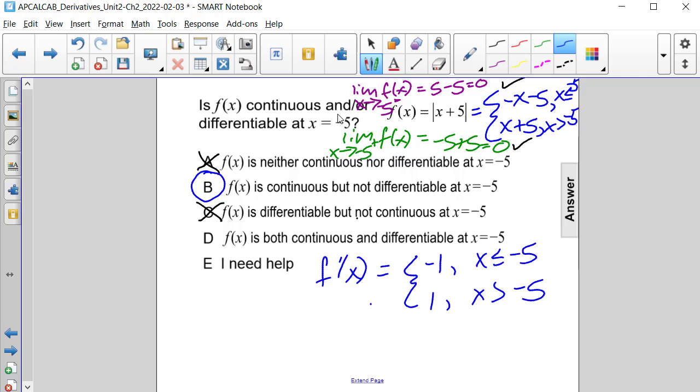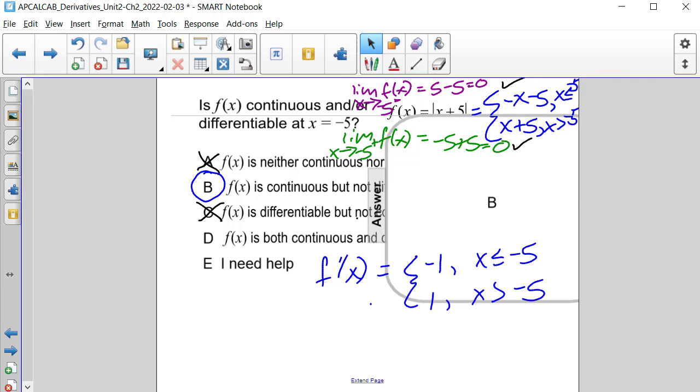And the answer here, then, is B. f of x is continuous but not differentiable at x equals negative 5.